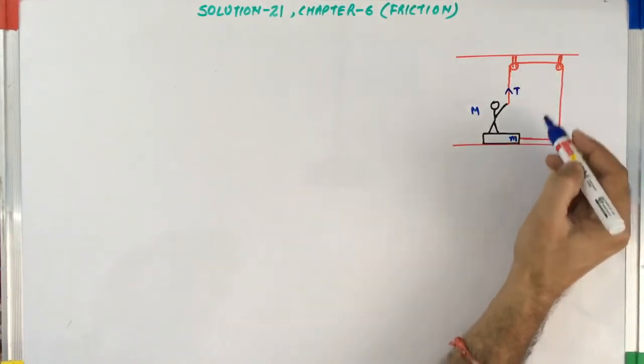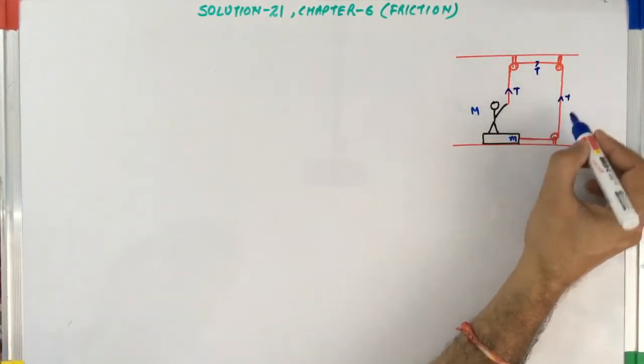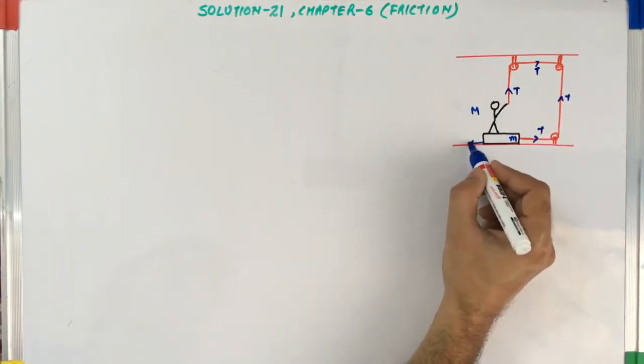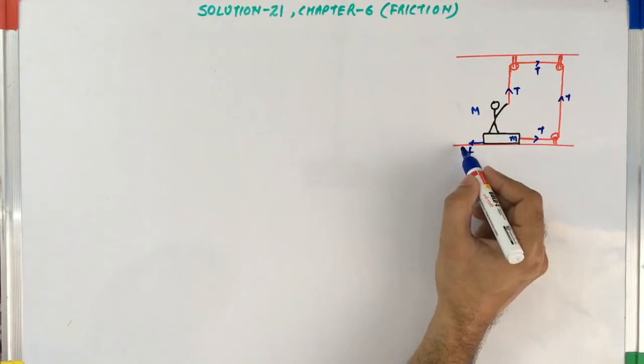Since this rope is same, tension is T everywhere. There will be a frictional force which will act in the opposite direction.